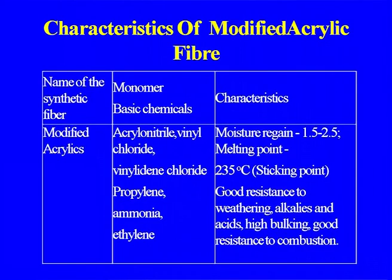Tensile strength 2 to 3 grams per denier, elongation at break 16 to 21 percent, and wool-like appearance giving use in the woolen industry for making hosiery, blankets, carpets and other areas. Modified acrylic fibers use acrylonitrile, vinyl chloride, and vinylidene chloride, with propylene and ammonia — or ethylene depending on the route. Properties include moisture regain, melting point 235, good resistance to weathering, alkalis and acids, high bulking, and good resistance to combustion.